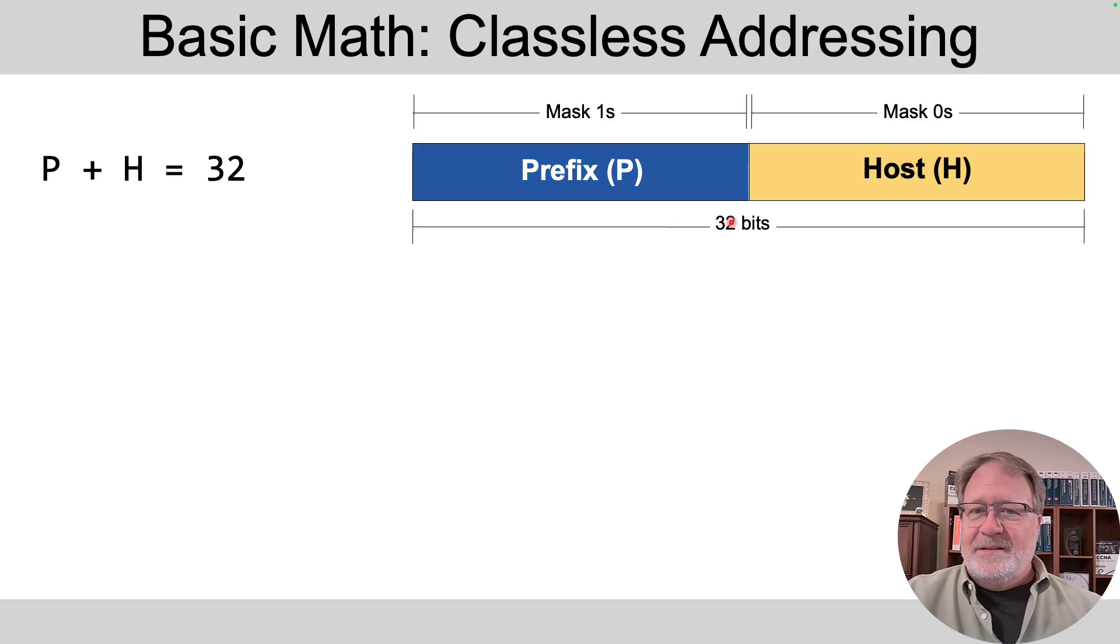So that's the way to think with classless addressing thoughts. The prefix and host part add up to 32 because IP version 4 addresses are 32 bits wide.